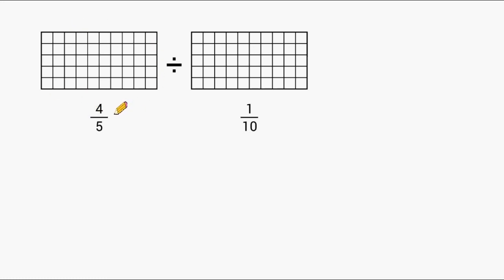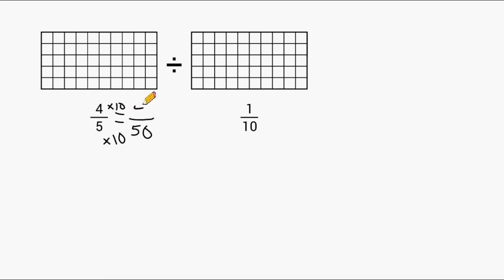We need to figure out how many squares to shade for 4 fifths of the figure. Writing an equivalent fraction out of 50: since 5 multiplied by 10 is 50, we multiply the numerator by 10 as well, giving us 40. So we shade 40 of these 50 square units to represent 4 fifths. Each horizontal row contains 10 square units, so we shade 10, 20, 30, and 40 square units — shading 4 out of the 5 horizontal rows.